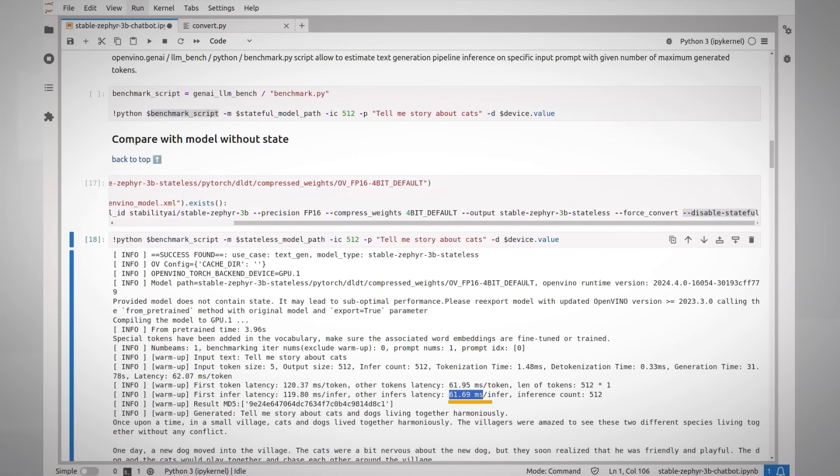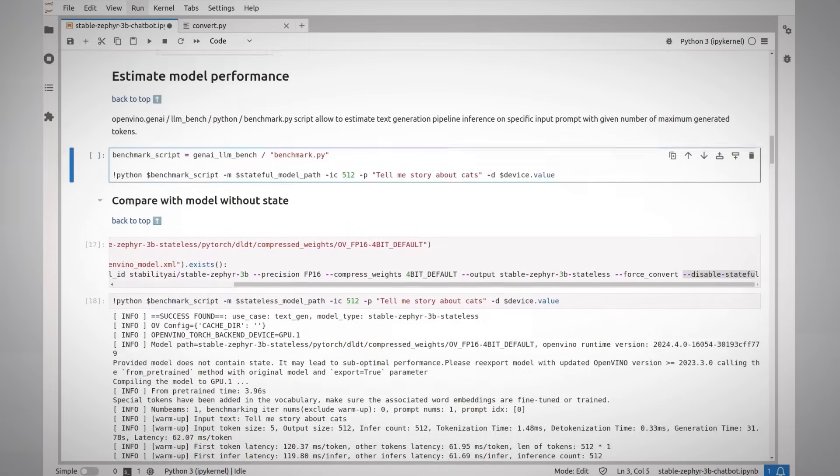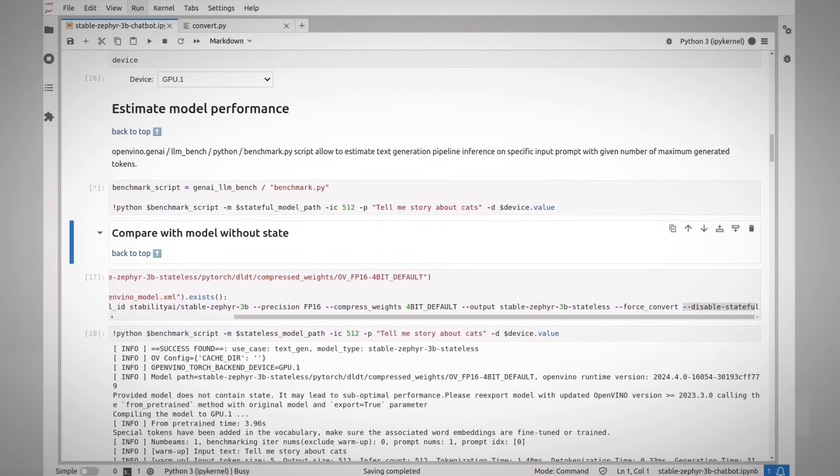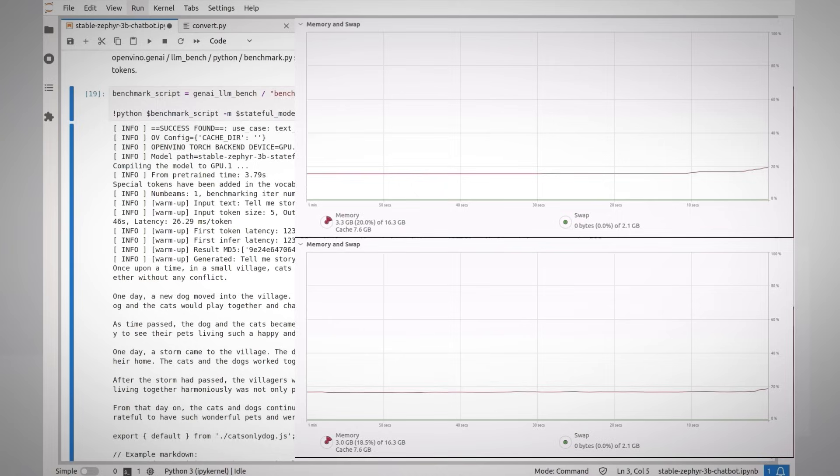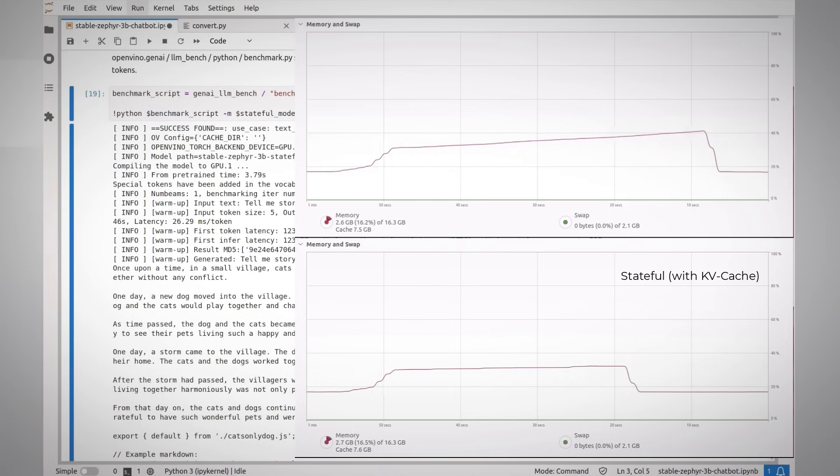And using the benchmark script to check the performance. 62ms for inference on my discrete GPU. And now for the stateful model with KV caching and I'm down to 26ms, half the time per inference. Looking at the memory utilization you can see how the memory footprint is smaller in the lower graph. KV caching saves you here just a little amount of RAM memory, but wow 2x the performance time.